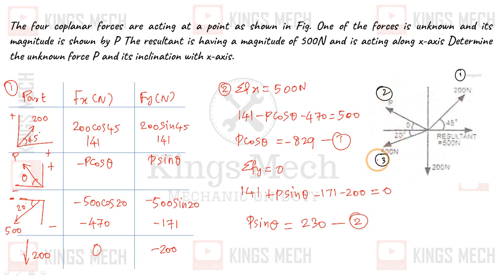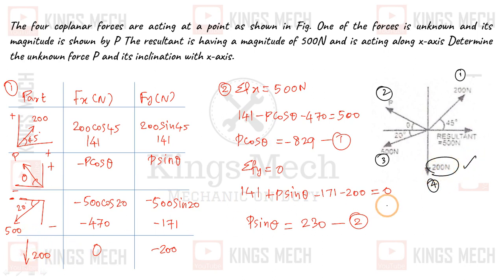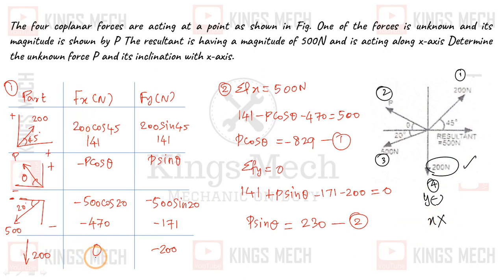Force No. 3 is 500 N and Force No. 4 is 200 N. Force No. 4 is very easy — it points downward, so its x-component is 0 and its y-component is negative. Therefore, F of x equals 0 and F of y equals minus 200.